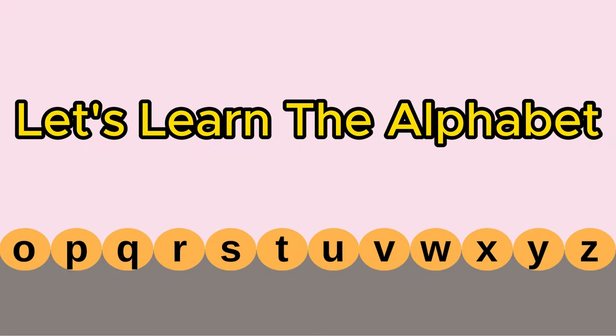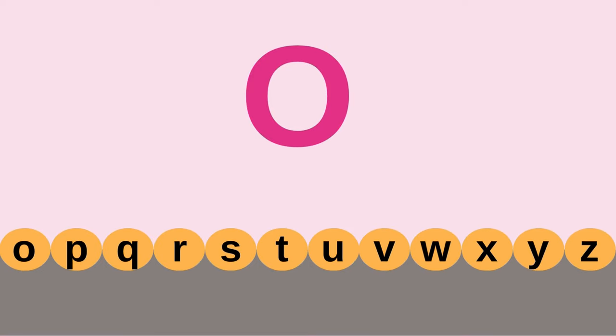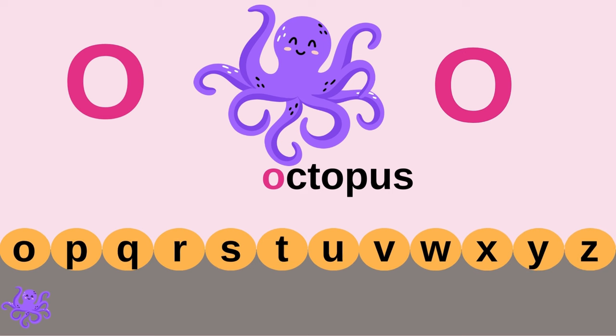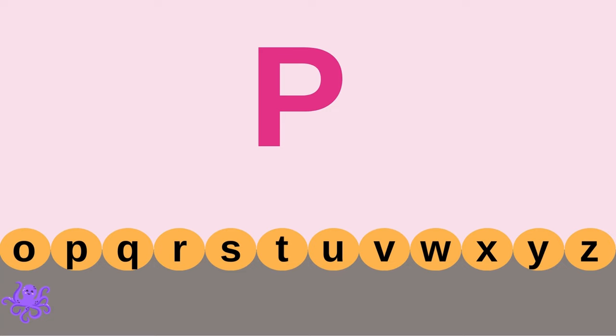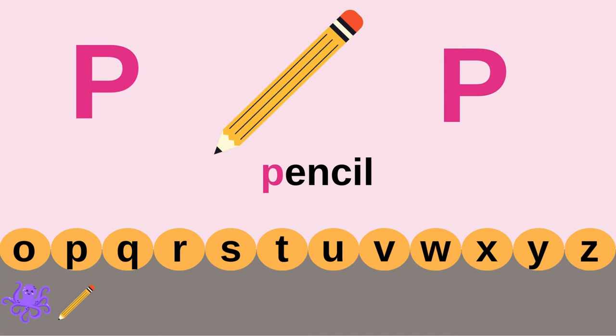Let's learn the alphabet. O — Octopus. P — Pencil.